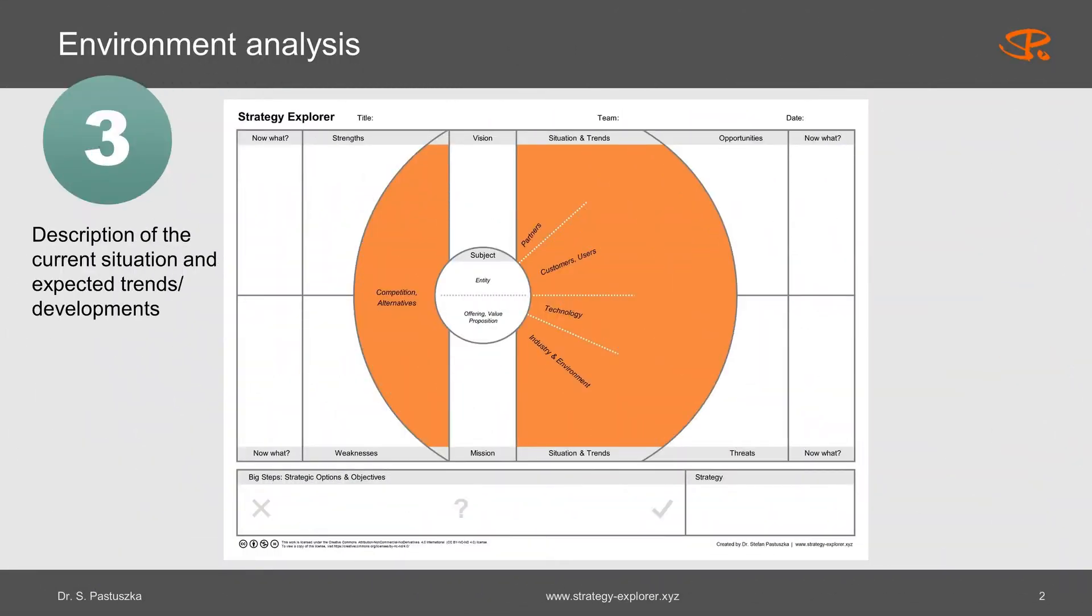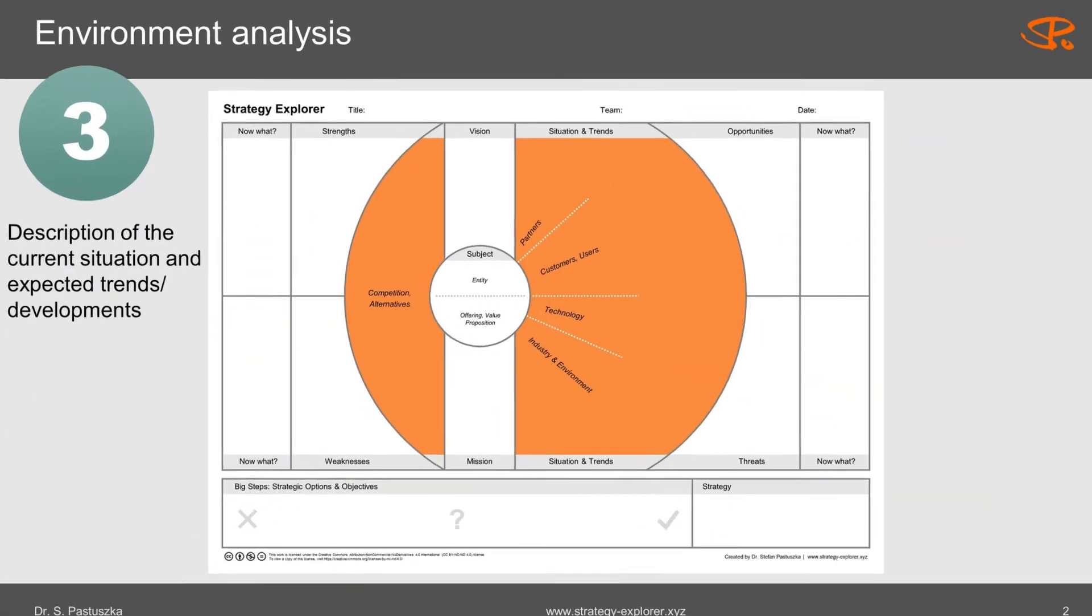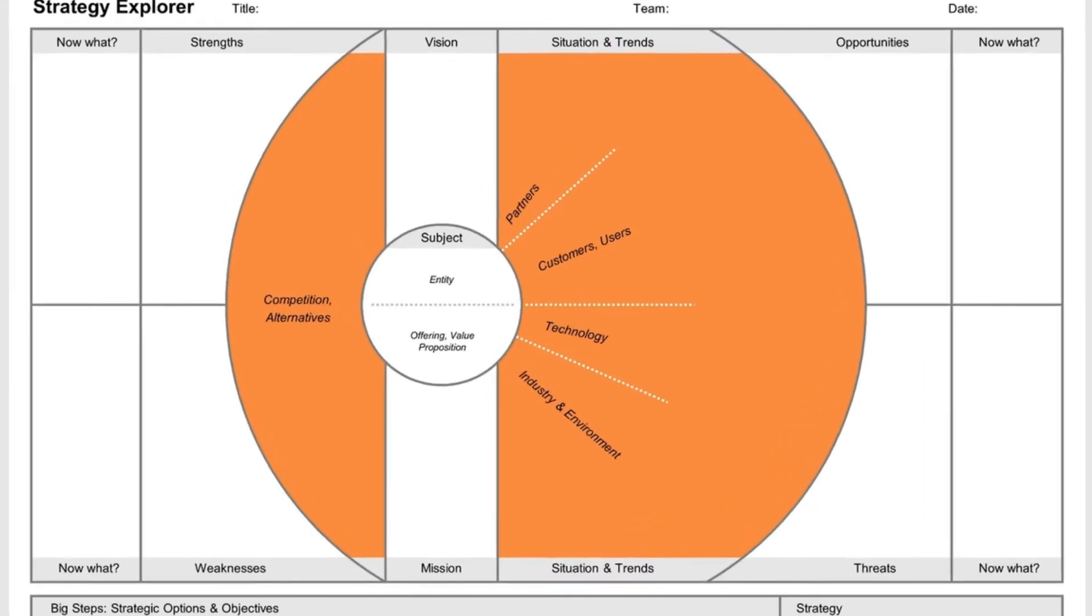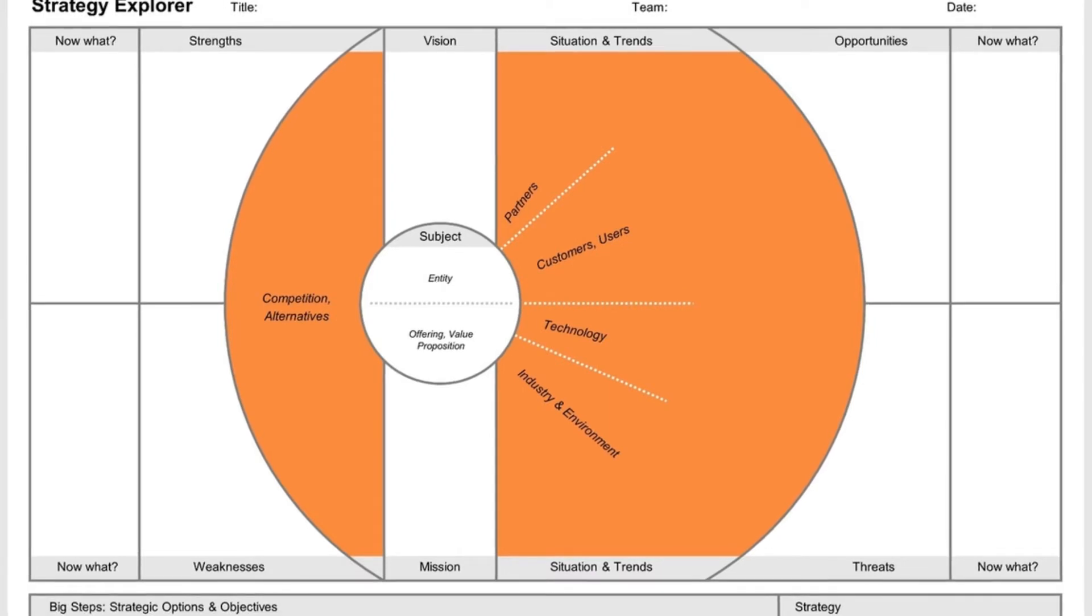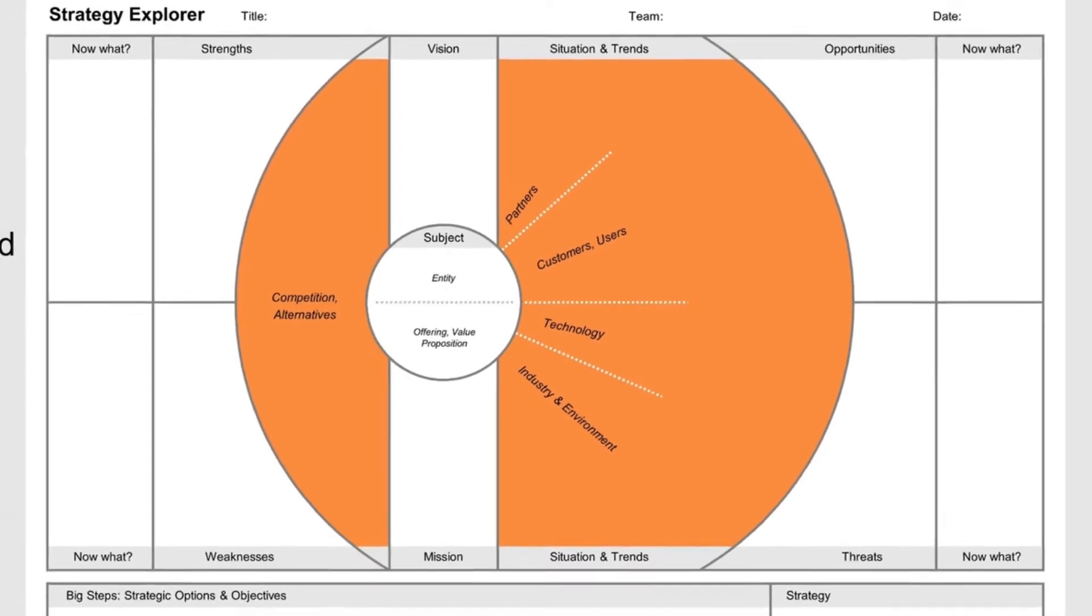In the Strategy Explorer, the subject field is located within a larger environment circle, entitled Situation and Trends. This field is the place where you collect the relevant observations and developments that characterize the environment of your subject.